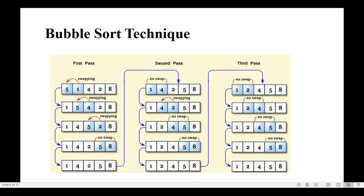When we compare the first number with the second number, if the first number is greater we do swapping. After swapping, 1 comes first and 5 moves right. Now we compare the second and third elements — 5 and 4. Again the first number is greater than the second number — 5 is greater than 4.